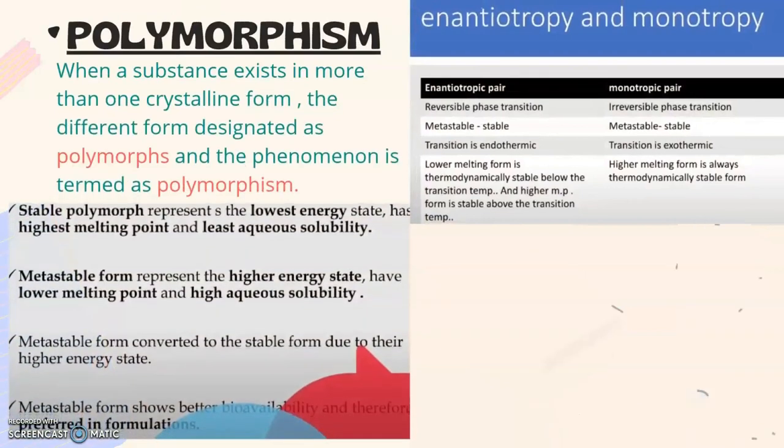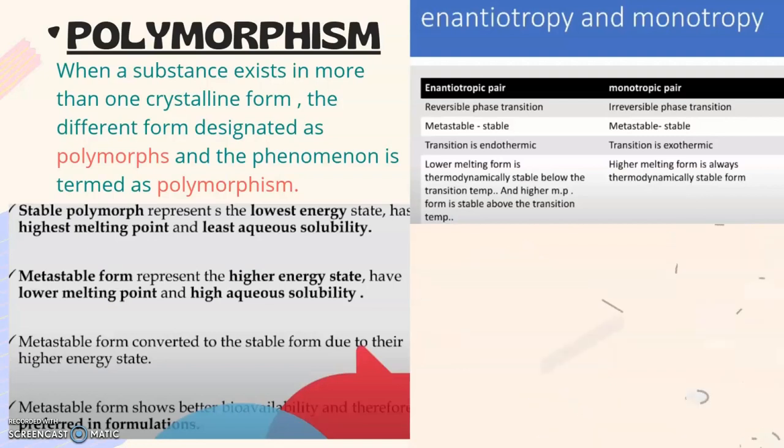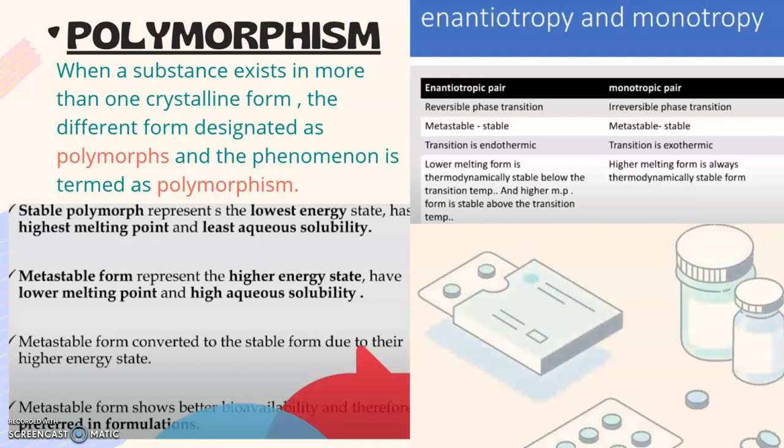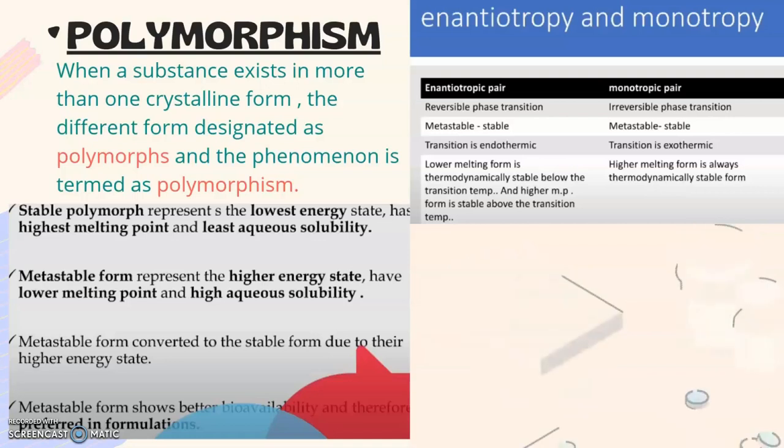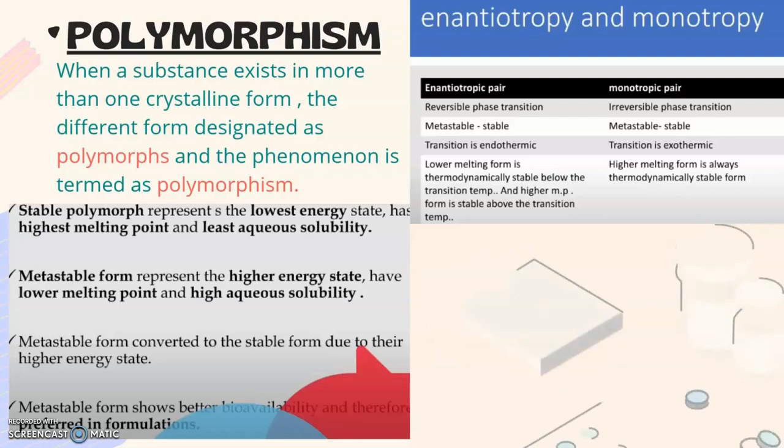Another and the last physical property included in pre-formulation is polymorphism. First of all, we must know about polymorphism. When a substance exists in more than one crystalline form, the different forms are designated as polymorphs and the phenomenon is termed as polymorphism. There are two types of polymorphs: stable polymorph and metastable polymorph. Stable polymorph represents the lowest energy state and has highest melting point and least aqueous solubility, whereas metastable form represents the highest energy state and has lower melting point and high aqueous solubility. So metastable form converts to the stable form due to their higher energy state.